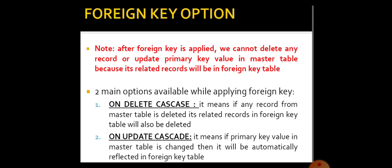The first one is ON DELETE CASCADE. It means if any record from the master table is deleted, its related records in the foreign key table will also be deleted. That means if you are deleting Employee No. 1, the entire record from ABC Ltd., and in training also, the details regarding Employee 1 will automatically be removed.